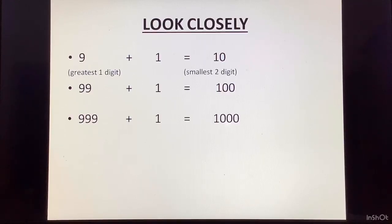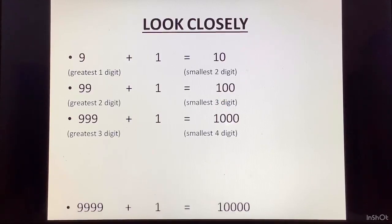But here, 9 is the greatest one digit number. And when we add 1 to it, we get the smallest two digit number. Similarly, 99 is the greatest two digit number. And when we add 1, we get the smallest three digit number. Similarly, 999 is the greatest three digit number. And when we add 1, we get the smallest four digit number. Now, this is something you all knew till now.